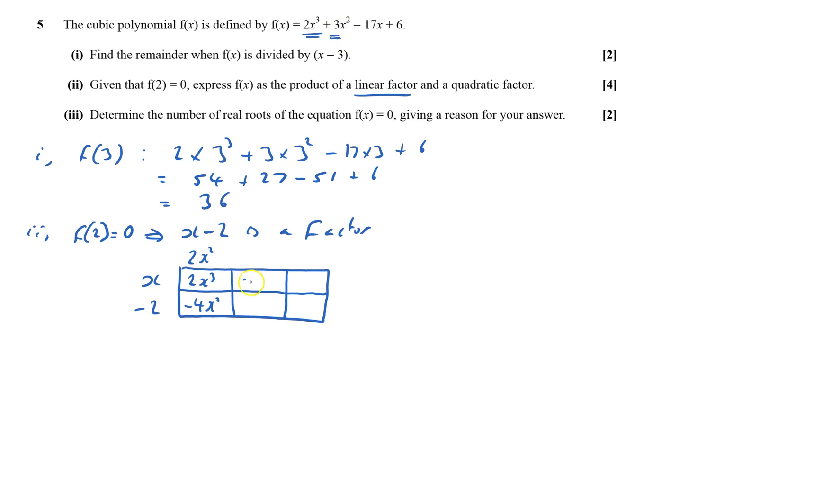So I need to get 7x squared here. X times 7x gives me that, which gives me minus 14x. I don't want minus 14x, I want minus 17x, so I've got to take away another 3x. How do I get that? I do x times by negative 3, and that gives me plus 6. Yippee, that's what I wanted, so I know I've got to check.